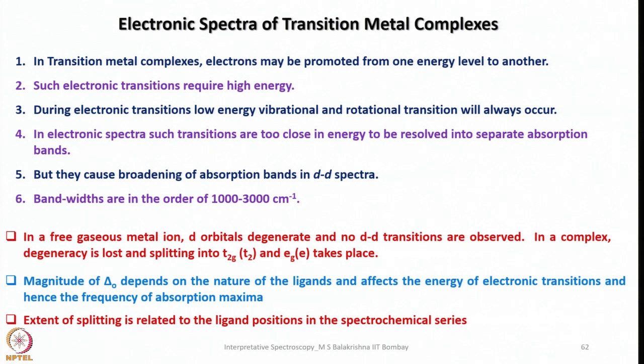The third category is sigma donor and pi acceptor ligands — examples include carbon monoxide, phosphines, nitrogen heterocycles, and others. These have low energy filled sigma orbitals and high energy empty pi orbitals. Because of sigma donation and pi back-donation from the metal to the ligand, the energy gap between HOMO and LUMO increases. As a result, these complexes are more stabilized, and if you want to have a d-d transition, it requires very high energy.